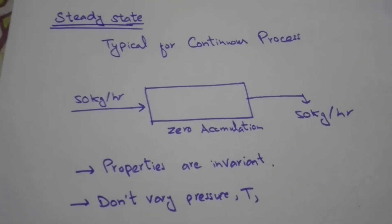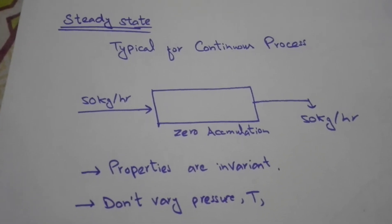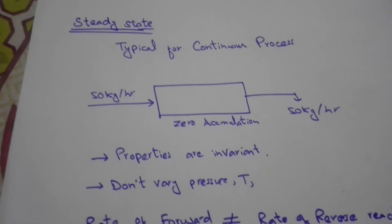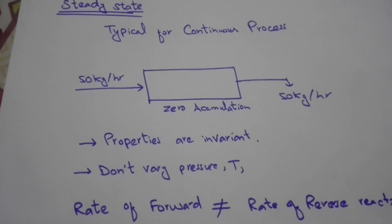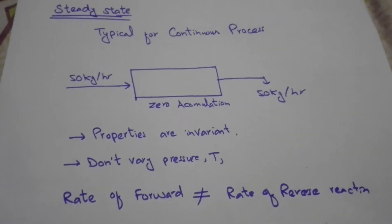Accumulation means material is staying inside the reactor. In steady state, input and output are equal. Properties are invariant - they don't vary. Pressure, temperature don't vary.